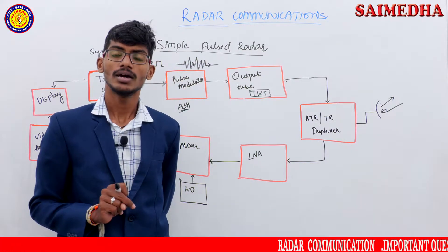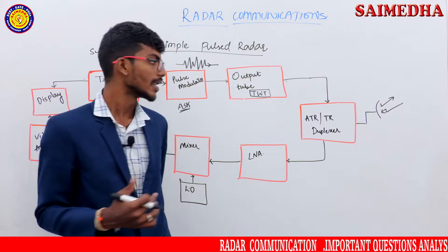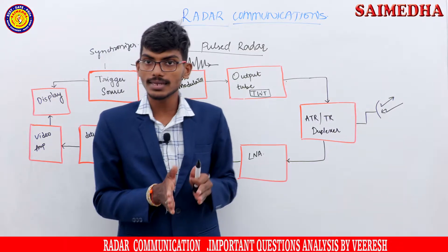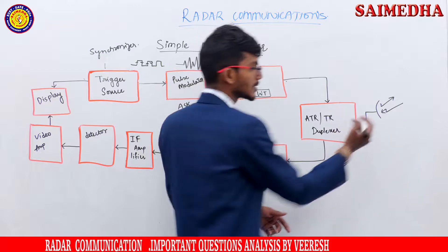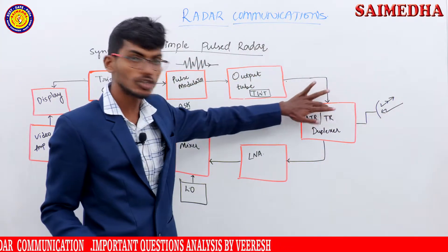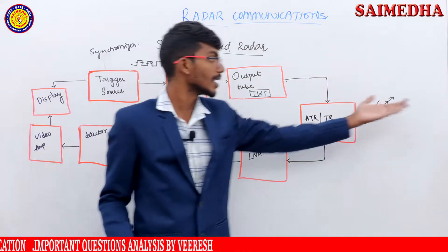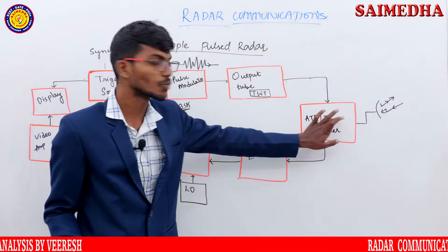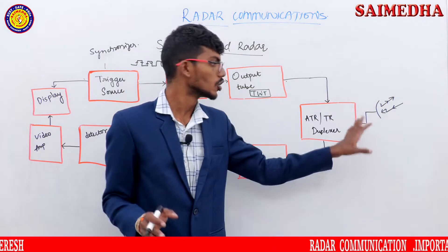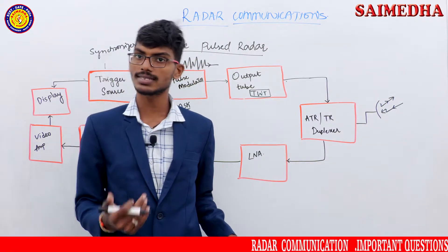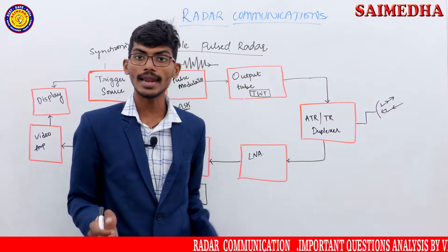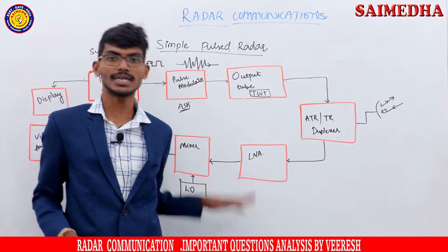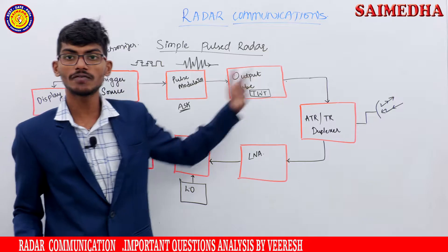The duplexer connects transmitter and receiver at the same time, alternating between them. When the signal is being transmitted, the duplexer is aligned to the transmitter side. When the echo signal is being received, the duplexer is aligned to the receiver side. It is aligned to transmitter while sending the signal to the target, and aligned to the receiver side while receiving the signal from the target. The duplexer protects the receiver from the high power of the transmitter signal.